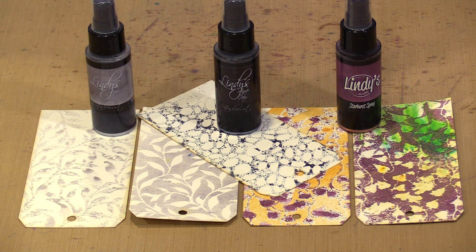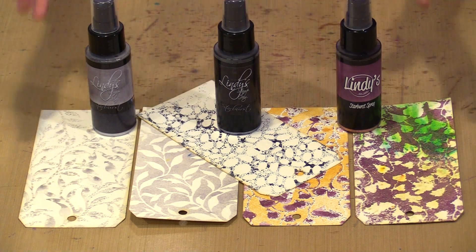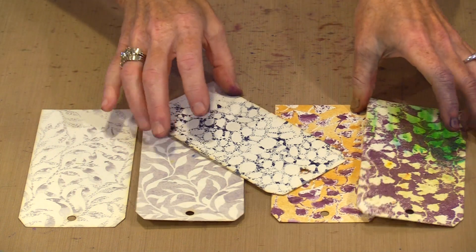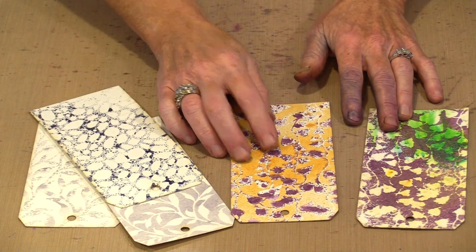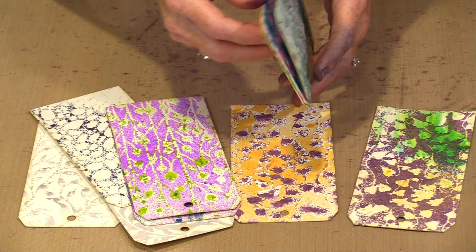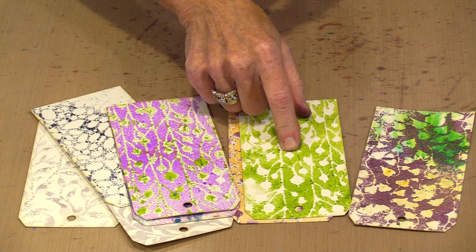When I'm spraying with something like the Starburst sprays, because I enjoy shimmer so much, one of the things that I like to do is what you see here, where I spray a color. I sprayed through this stencil named Buds.